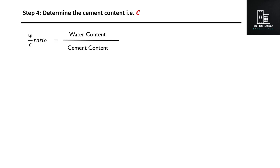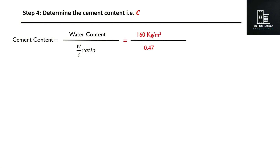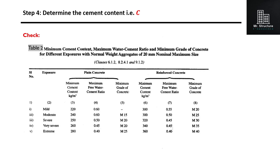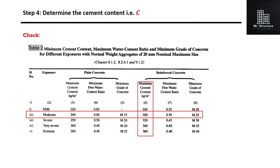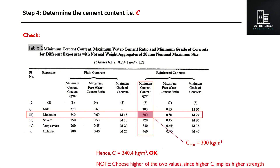In the next step, we know the water-cement ratio is equal to the ratio of water content to cement content. Since we now know the water-cement ratio and water content, we can determine the cement content. The cement content comes out to be 340.4 kg per meter cube. This value needs to be checked with the minimum cement content. For moderate exposure condition and reinforced concrete, the minimum cement content is 300 kg per meter cube. Since 340.4 kg per meter cube is higher than 300 kg per meter cube, C equals 340.4 kg per meter cube. In simple terms, the higher of the two values is chosen, since higher cement content means greater strength.